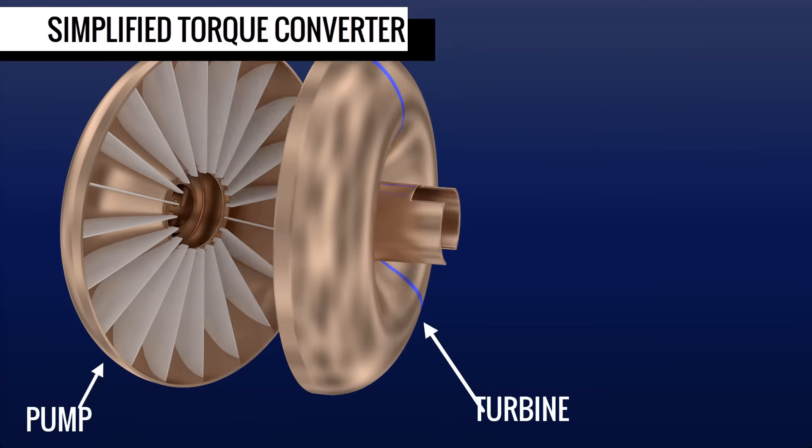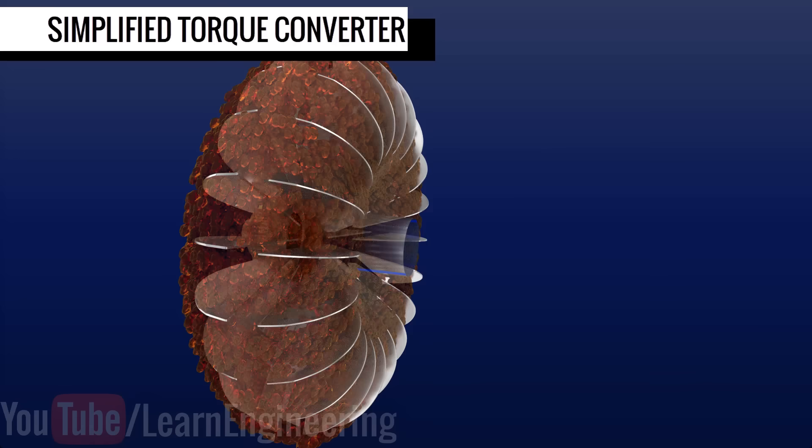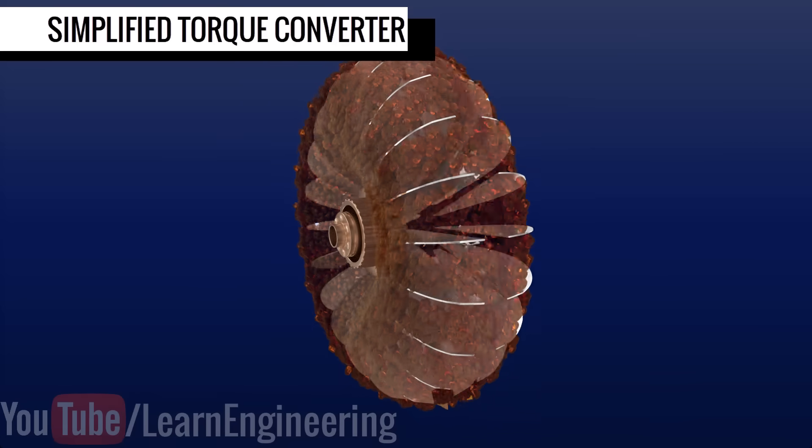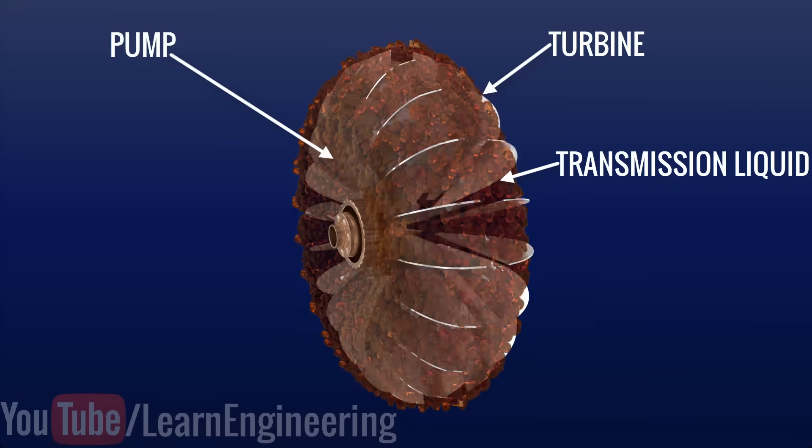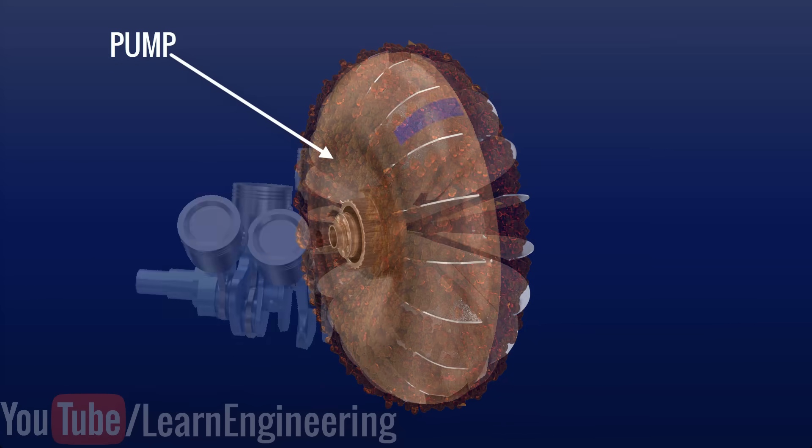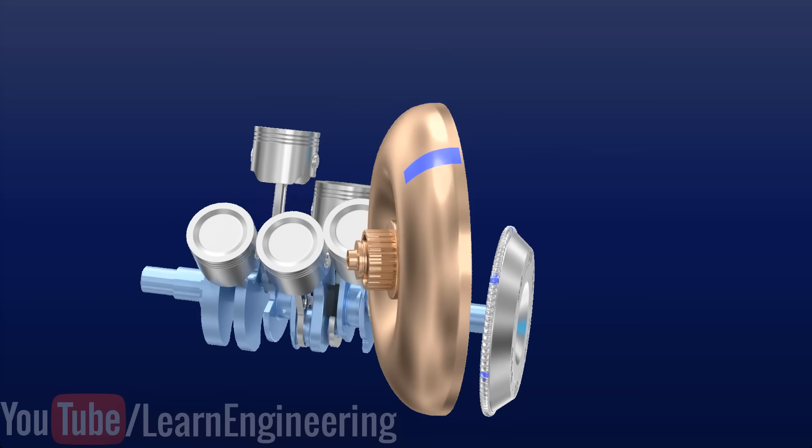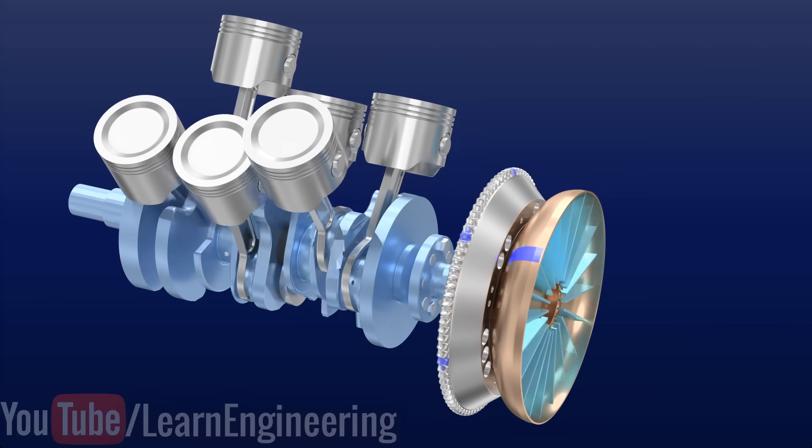Let's see how it works. This is a really simplified torque converter. It is basically a pump and a turbine immersed in transmission liquid. The pump is directly connected to the engine, so it always turns at the engine speed.